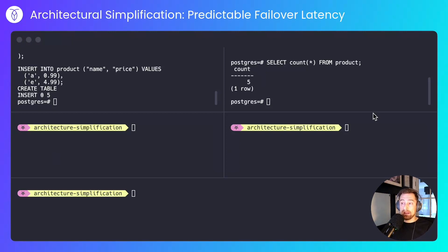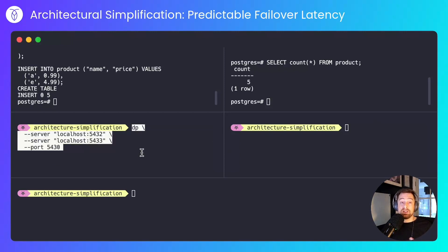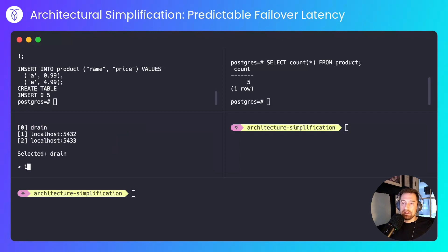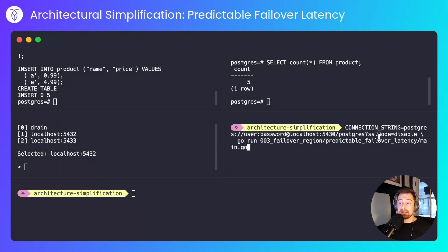Next, I'll spin up a load balancer. I created a simple TCP proxy that will initially point to the primary node, then I'll run an application whose connection string points to the TCP address exposed by the proxy.